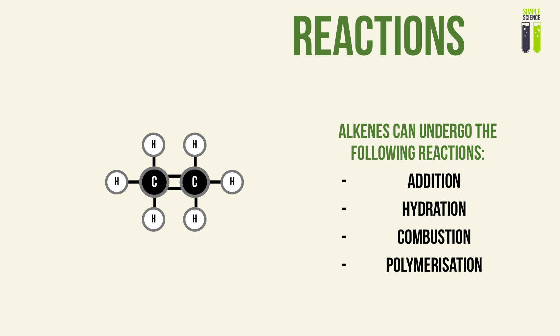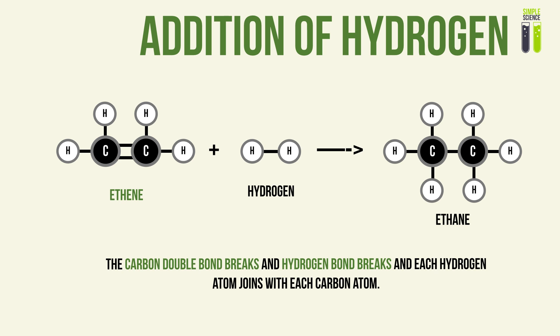Now let's look at the reactions of alkenes. As a result of its carbon double bond, alkenes can undergo quite versatile reactions. The four types of reactions are: addition, hydration, combustion, and polymerization. The first type is the addition of hydrogen to the carbon double bond, also known as hydrogenation.